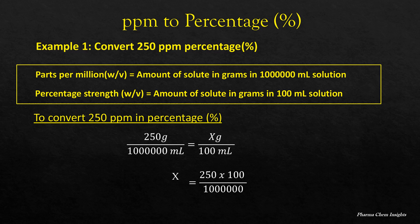So x is equal to 250 times 100 divided by 1,000,000. That is equal to 250 divided by 10,000. By calculating, we get x is equal to 0.025 percentage.